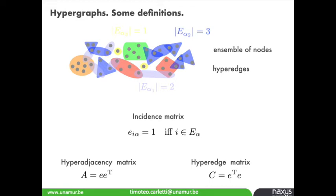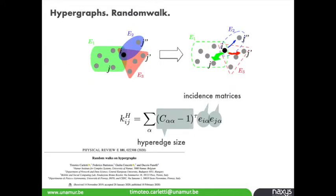We can also construct the hyper-adjacency matrix C, whose entries C_α,β represent the number of nodes belonging to both hyperedges α and β. Hypergraphs can represent co-authorship networks where nodes are authors and papers are hyperedges, or social networks where hyperedges are groups of agents sharing common features.